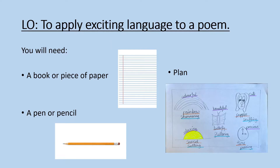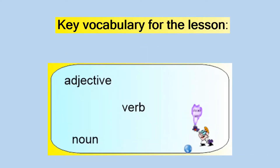Our learning objective for today is to apply exciting language to a poem. We're going to be writing our own magic box poems today - we're going to start them and finish them tomorrow. You will need a piece of paper or a book, a pen or a pencil, and your plan. If you don't have a plan from yesterday, don't worry - later on I'm going to put mine on the screen so you can use that one. The key vocabulary for today's lesson is adjective, verb, and noun.